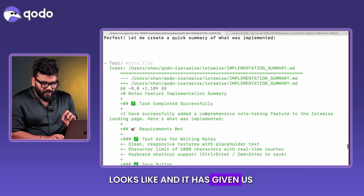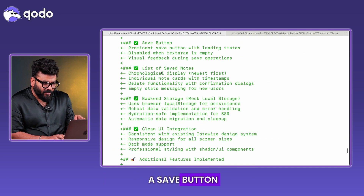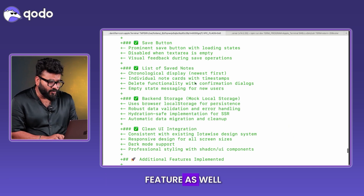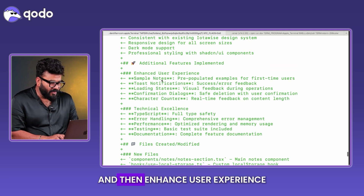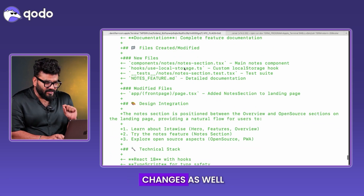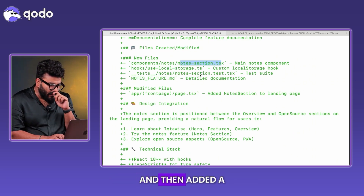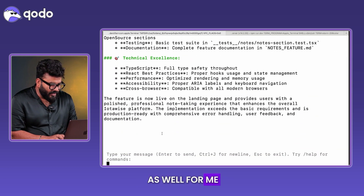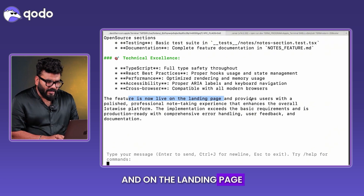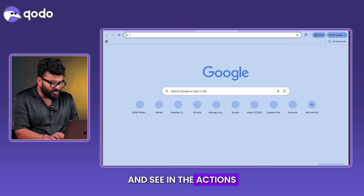Within a few seconds, Kodo has implemented the changes. It gave a summary and created an MD file. It added a save button, a list of saved notes feature, a back-end mock local storage, a clean UI, and enhanced user experience. The file changes include a 'notes' component, local storage integration, and a quick readme. It says the feature is now live on the landing page.